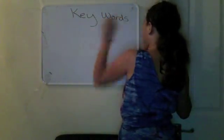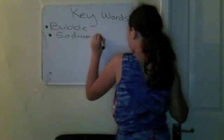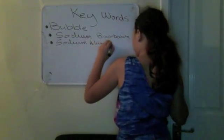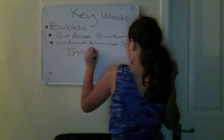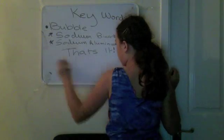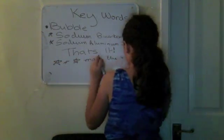Okay, so the key words are bubbles, which make the cake rise. Sodium bicarbonate and sodium aluminium sulphate make the bubbles, and the bubbles are what makes the cake rise.